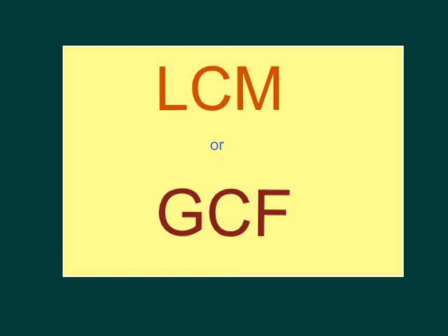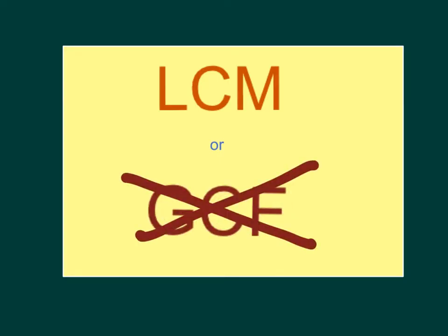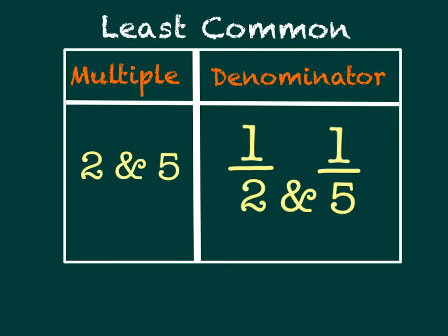Sometimes when using these initials it gets confusing, like whether or not you're supposed to actually find the LCM or the GCF. To help avoid this confusion, it's good to look at the meaning of the actual words. So the word 'least' means the smallest, and the word 'common' means the same.